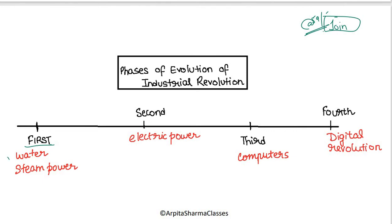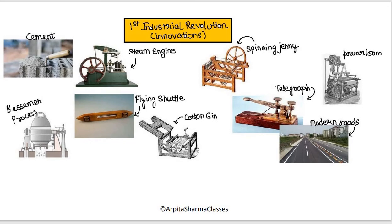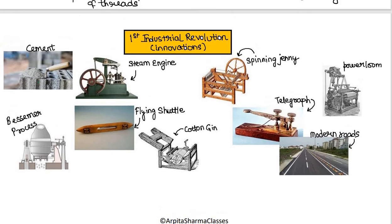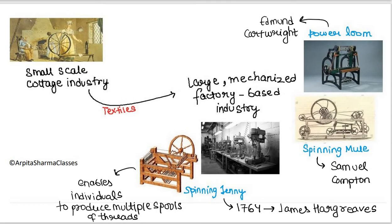In the first phase of the Industrial Revolution, we used water and steam power. Different innovations were made, for example: cement, Bessemer process, steam engine, flying shuttle, cot engine, spinning jenny, telegraph, modern roads, and power looms. Before the Industrial Revolution, we worked on a small cottage-scale industry, but it was converted into a large mechanized factory-based industry during the Revolution. So a mechanized factory system came about.